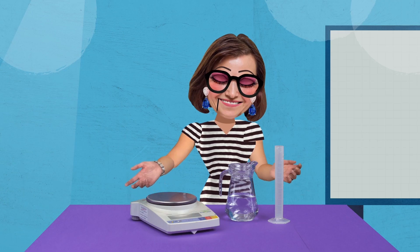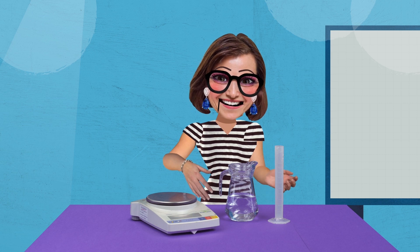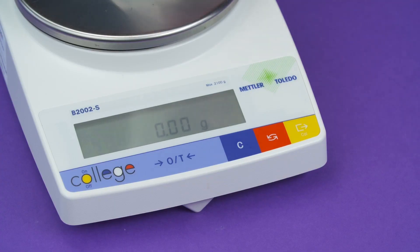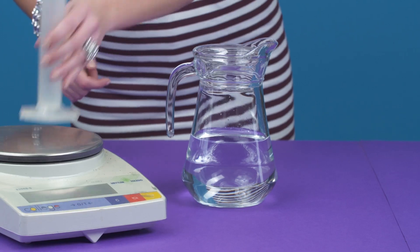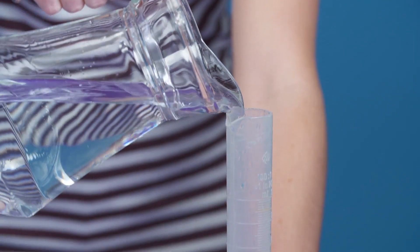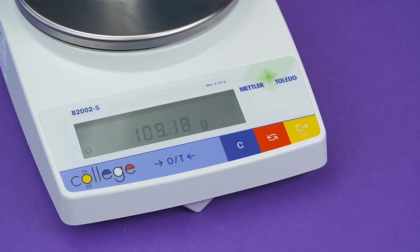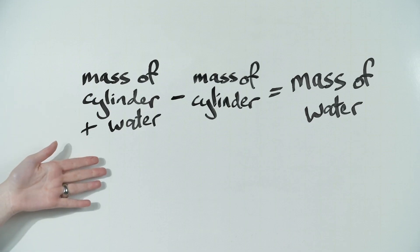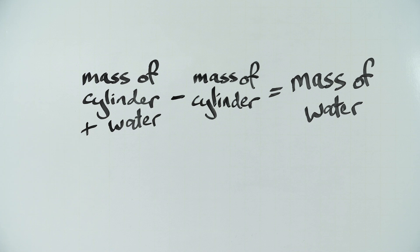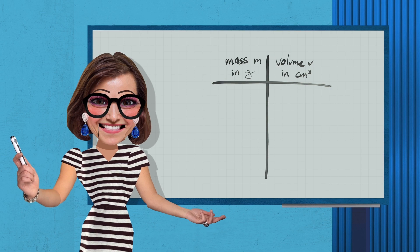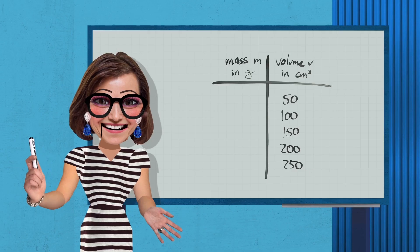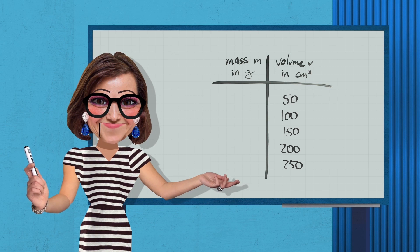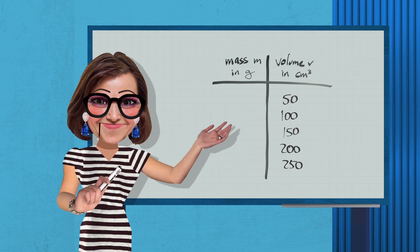For liquids, we follow the same process, although there's a slightly different way of measuring the mass of the liquid. First, we must measure and record the mass of the empty measuring cylinder. Next, we place 50 cubic centimeters of water into the cylinder and then find and record its mass. We then subtract the mass of the empty cylinder from the mass of the cylinder plus water, leaving us with the mass of the water itself. We repeat the procedure, adding 50 cubic centimeters each time, up to 250 cubic centimeters.